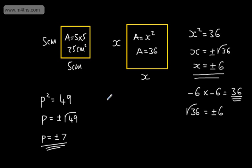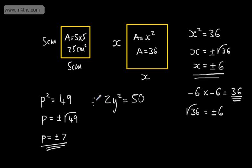Let's do another one. Let's say we have 2y squared equal to 50, and we want to solve for y. The first thing I'm going to do is divide both sides of this equation by 2. That gives us y squared equal to 50 divided by 2, which is 25.